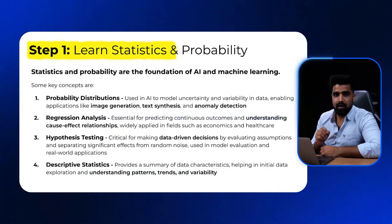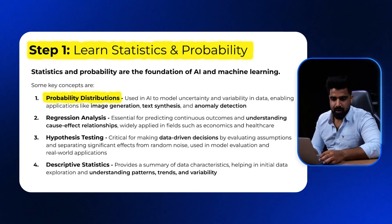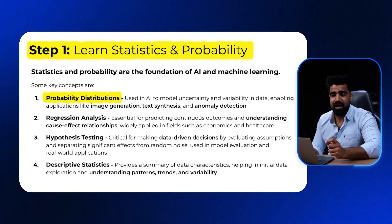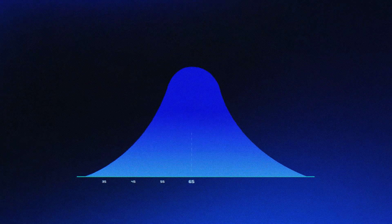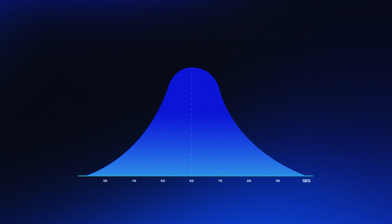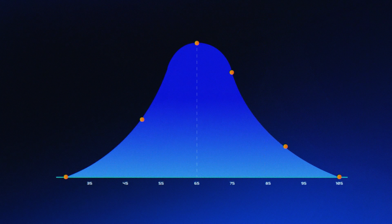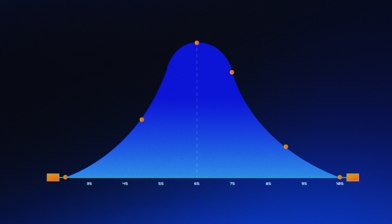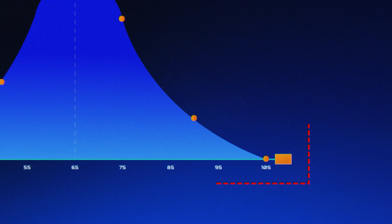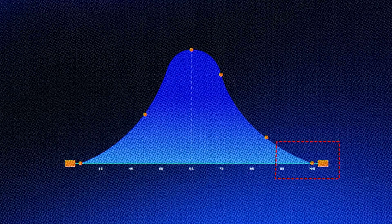Step one: learn statistics and probability. Here, you have to focus on probability distributions, which will help you in identifying how the data is scattered. For example, imagine these are weights of people in India, where you can see there are some outliers on the extremities. This will help us in finding anomalies and will help our model to understand the data better.